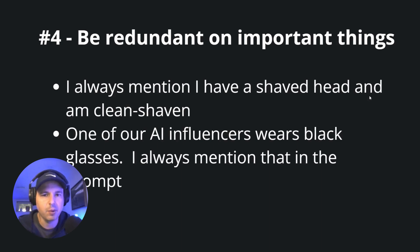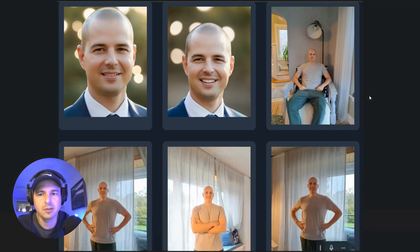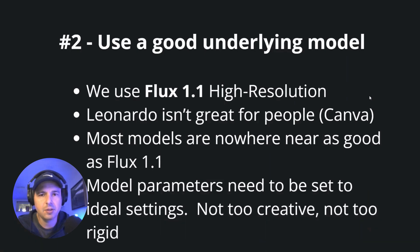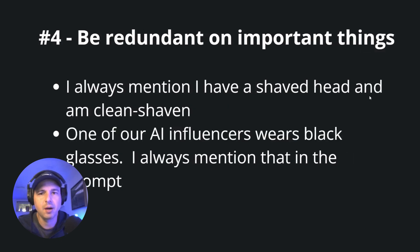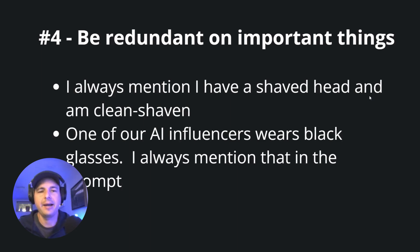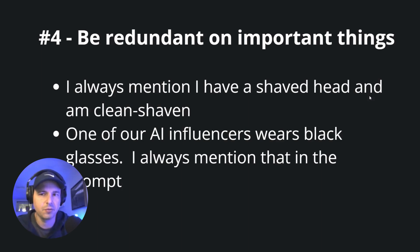You do want to be redundant on important things. For example, I always mention that I have a shaved head and I'm clean-shaven in my prompts, because even though all my training photos show that, these models will sometimes just put a hairstyle or facial hair on me anyway. Mentioning it in the prompt double-checks that the model knows it's important. Similarly, one of our AI influencers wears black glasses, so I always mention that in the prompt — if I want to make sure something is there, mention it more than once.